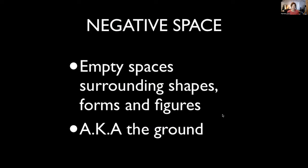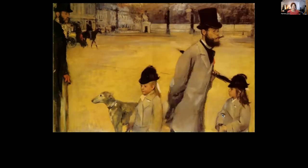Negative space is the empty spaces, the surrounding shapes, forms, and figures — also called the ground. So in this Manet painting, the positive space would be the figures: the four people, the dog, in the foreground. The negative space is everything else — the yellow ground, literally the floor, that you see in this painting. If you look at that yellow space as an actual shape or part of the painting and not something just behind the figures, you really can start to get a sense of how important negative space is to artists, because there's more so-called negative space in this painting than positive space.